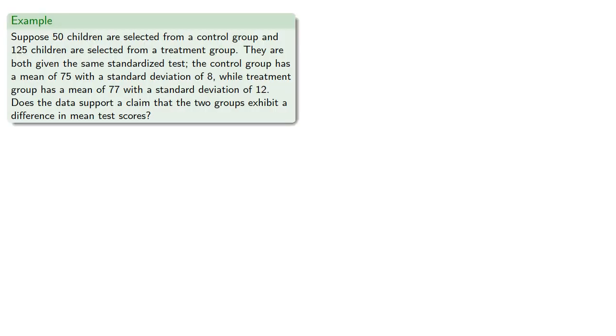Let's set this up. Suppose 50 children are selected from a control group and 125 are selected from a treatment group. They are both given the same standardized test. The control group has a mean of 75 with standard deviation 8, while the treatment group has a mean of 77 with standard deviation 12. Does the data support a claim that the two groups exhibit a difference in test scores?